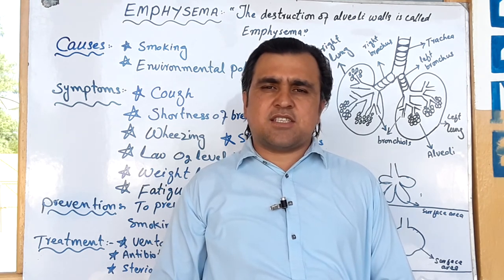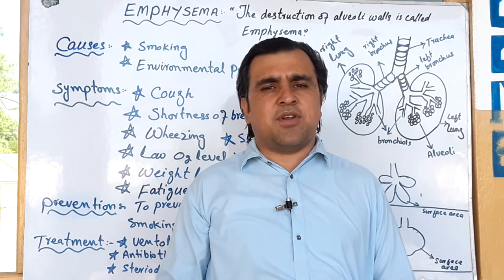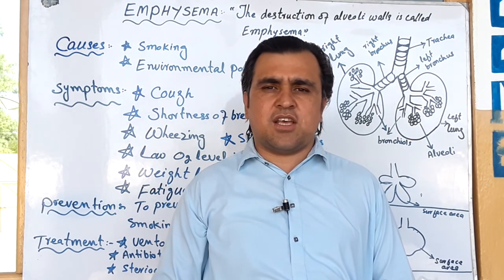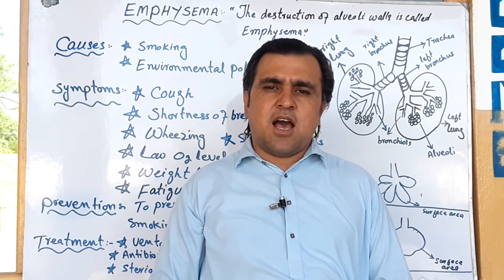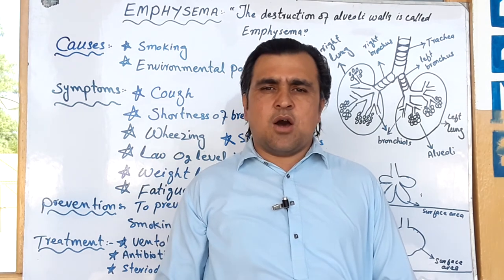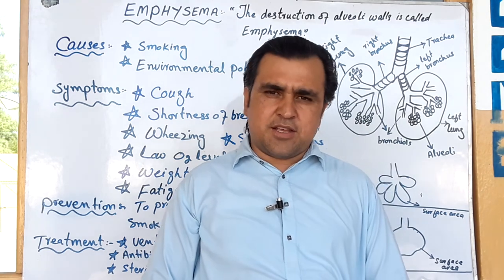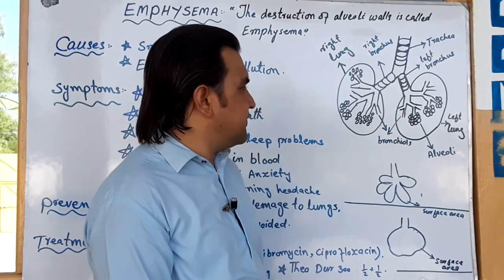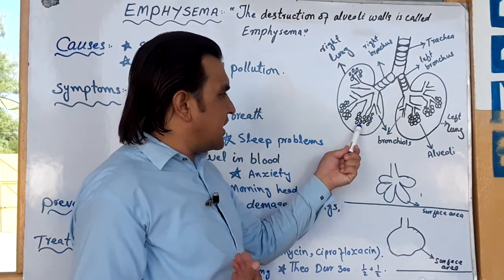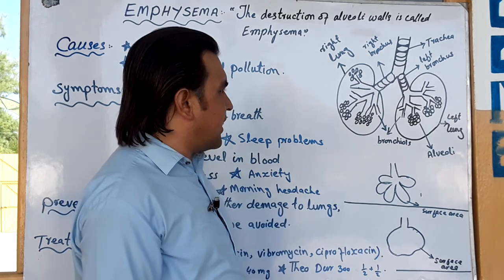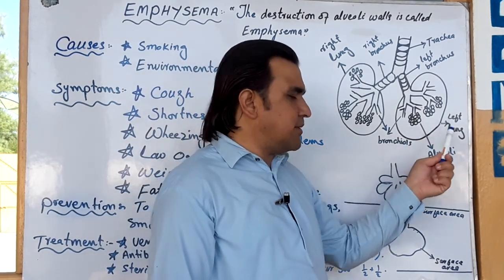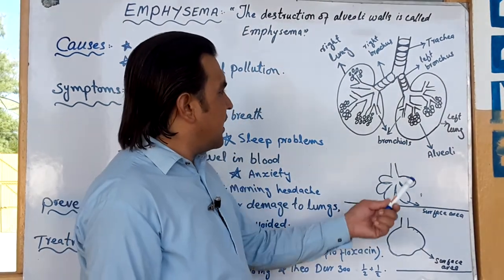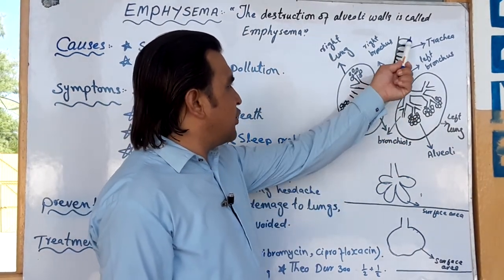In the human lungs, the alveoli are present. Emphysema involves the destruction of alveoli. The human chest contains two lungs — the right lung on the right side and the left lung on the left side.